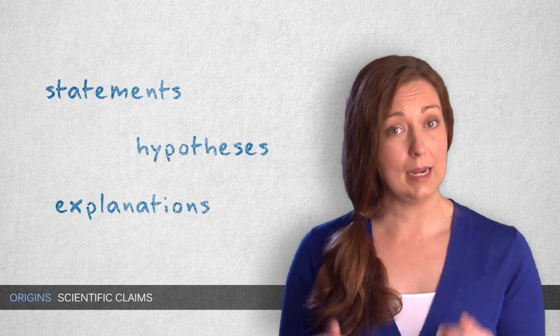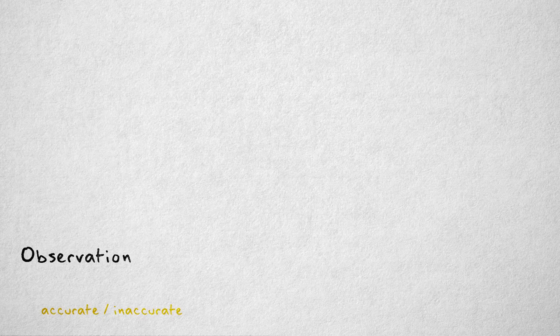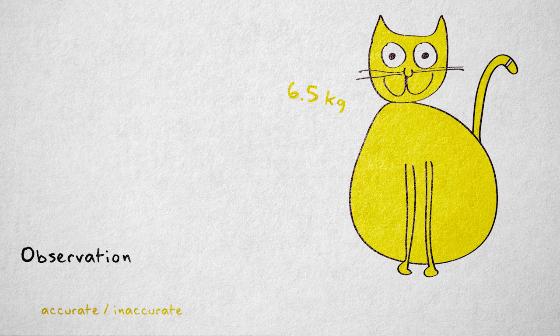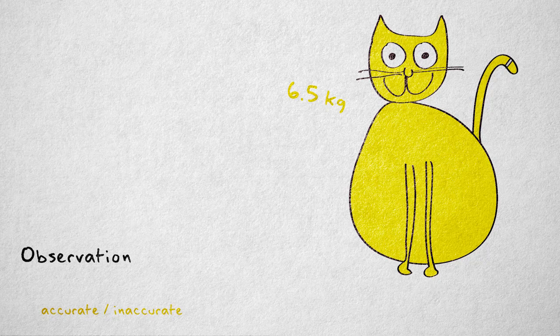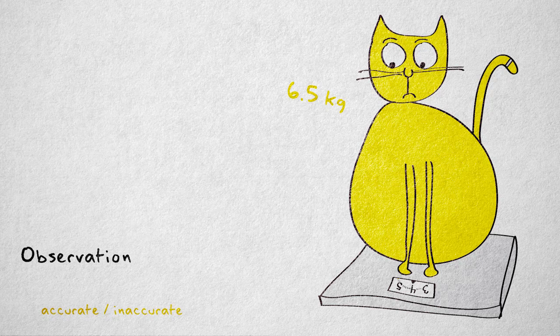In science, the most basic claim is an observation. An observation can be an accurate or inaccurate representation of the world. Suppose I observe that my cat, which has a ginger-colored coat, weighs 6.5 kilograms. Most scientists would accept this observation as a probably fairly accurate reflection of a specific aspect of the world around us, assuming the weight scale is valid and reliable.